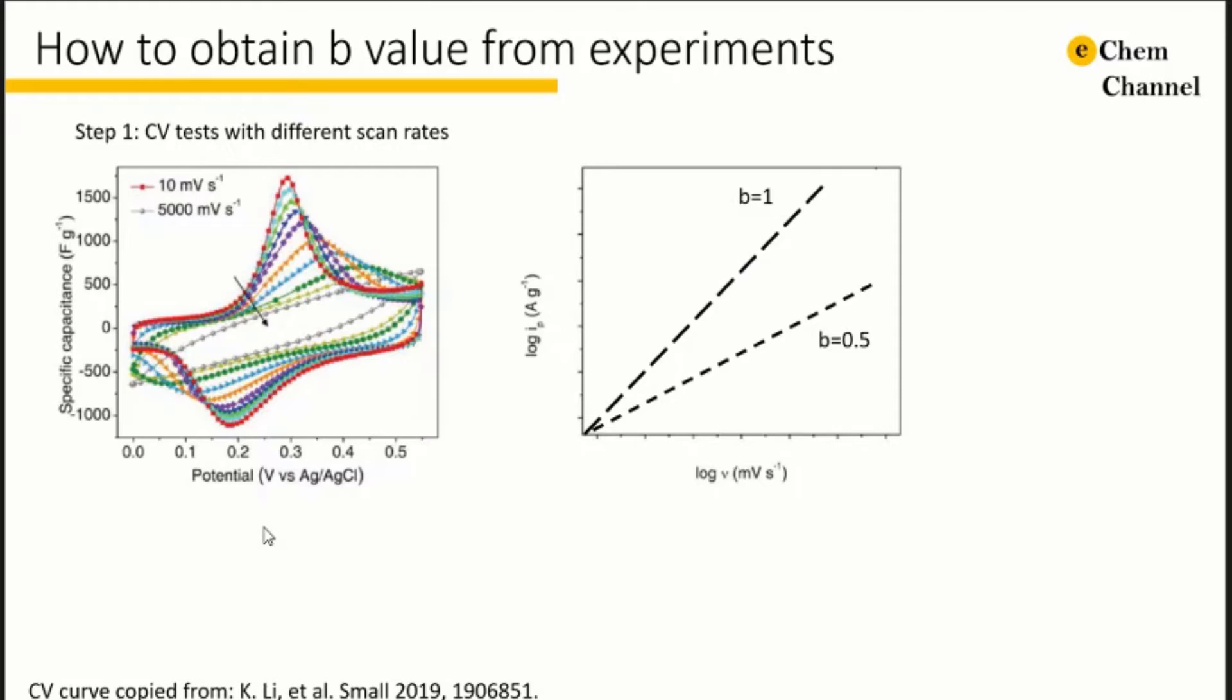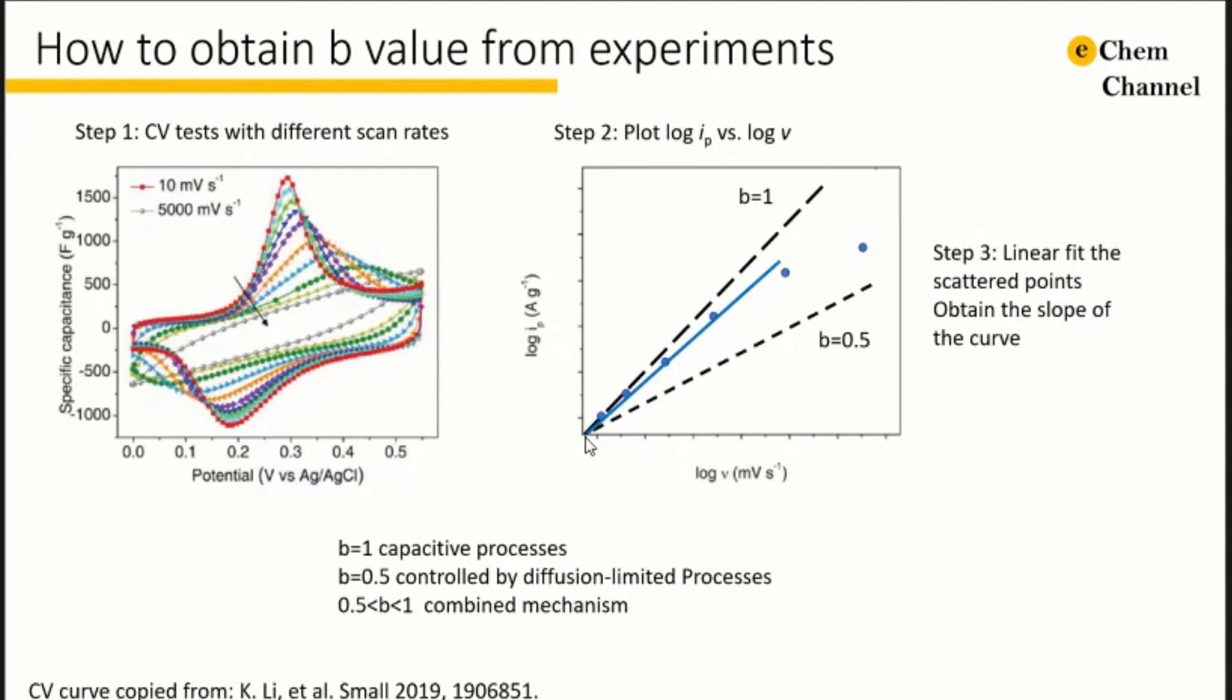How can we obtain the b value from experiment is given here. Step 1: obtain the CV curve at different scan rates. Read the peak current at different scan rates. Step 2: plot log of the peak current as a function of the log of the scan rate. Step 3: linear fit the scattered points. The slope of the curve is the b value.